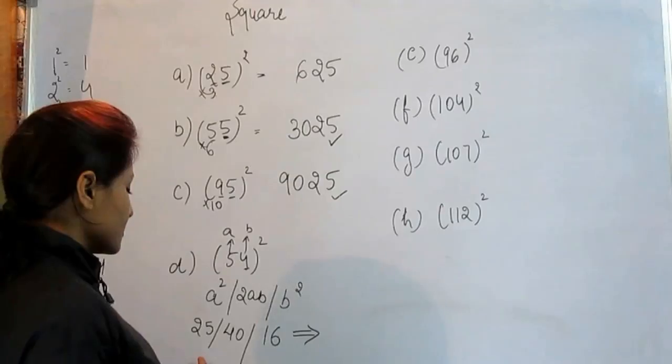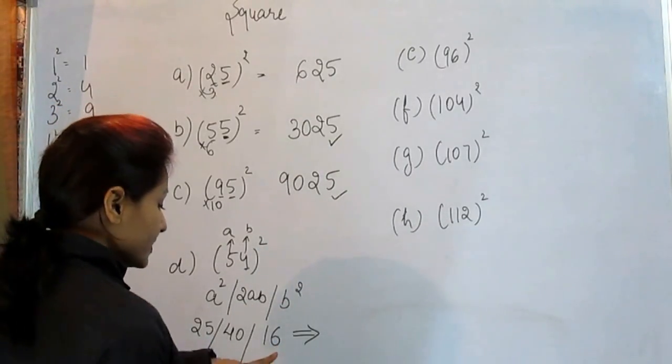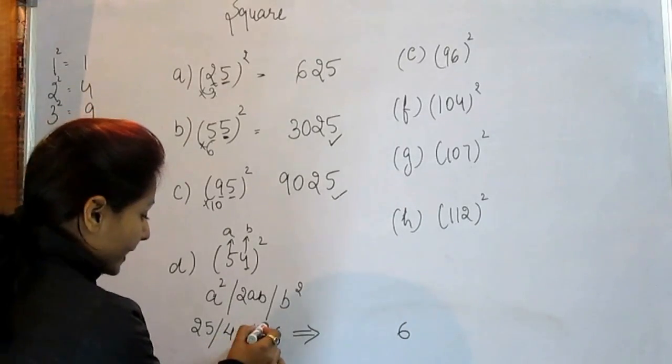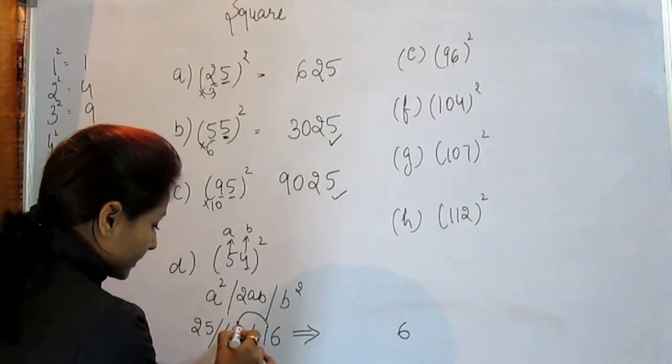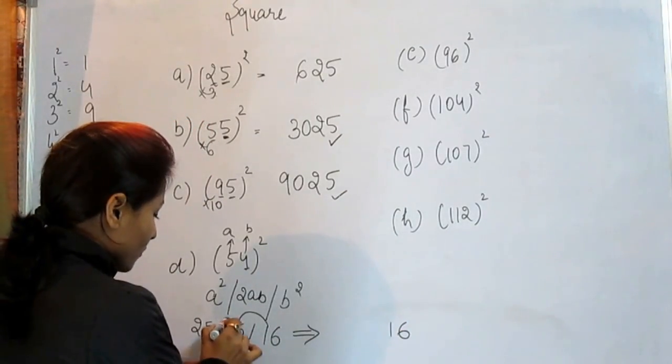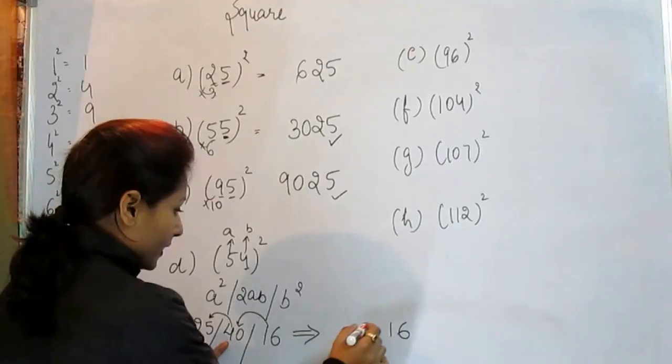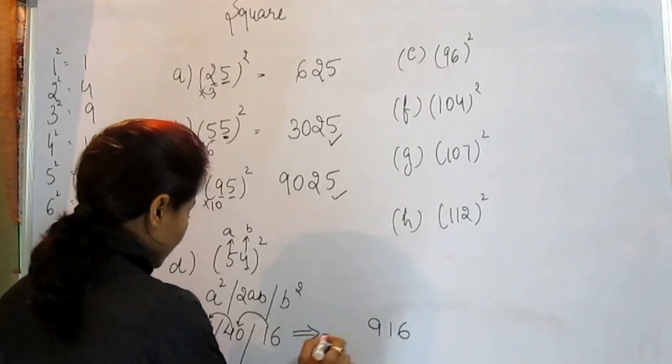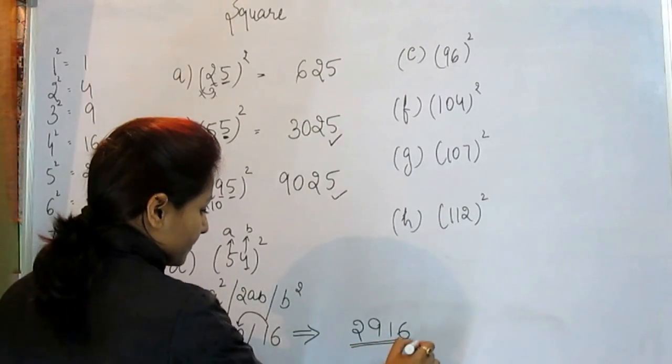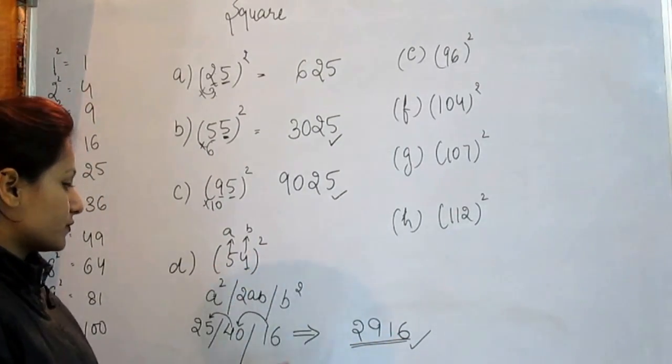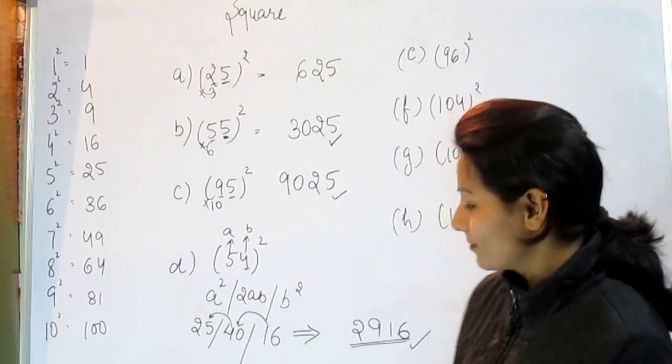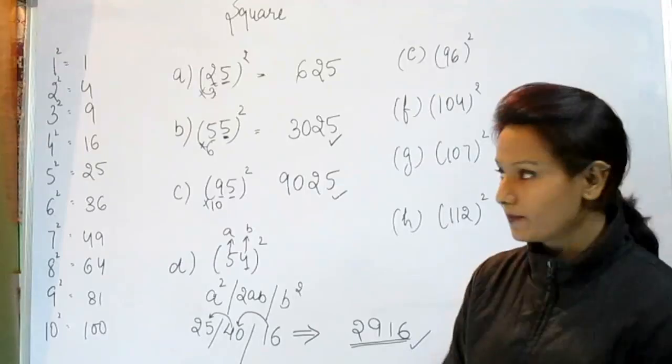So always we start from the end. What is the last number? That is 6. Now add this 1 in this number, it becomes 1. Now this 4 add in this number, it becomes 9. And this 2 is as is. So this is the answer. The square of 54 is 2916.